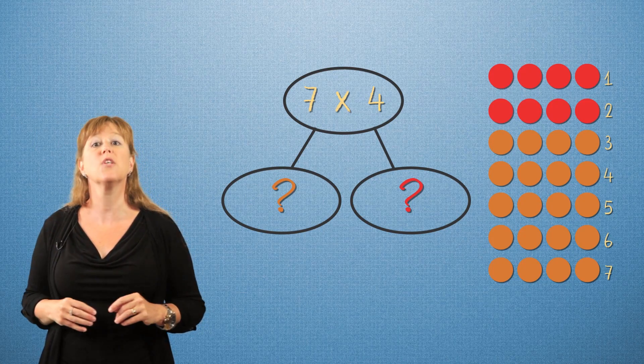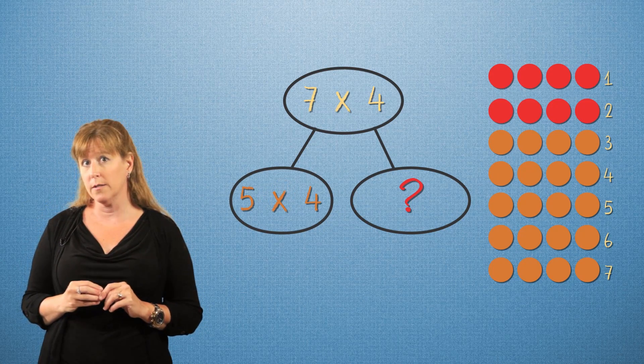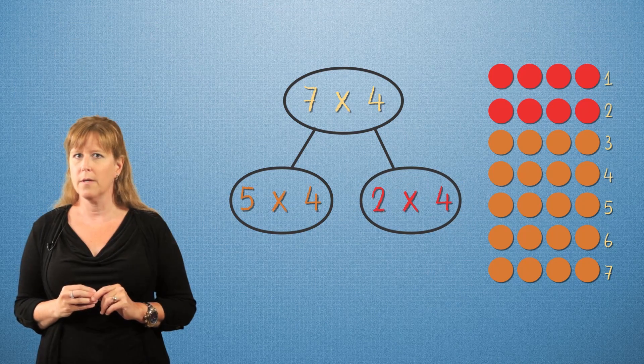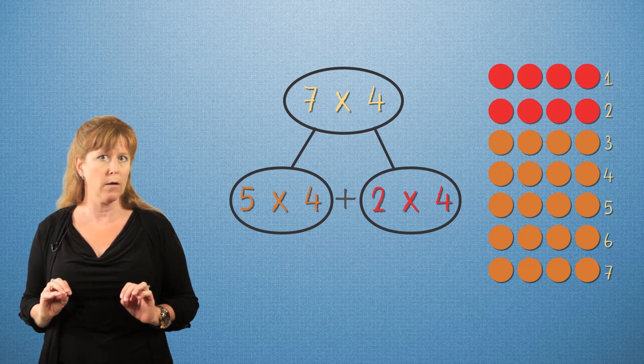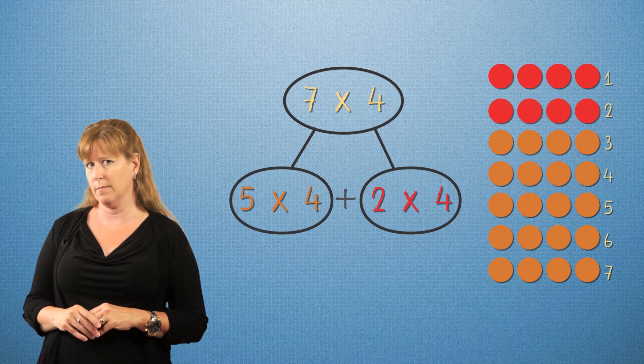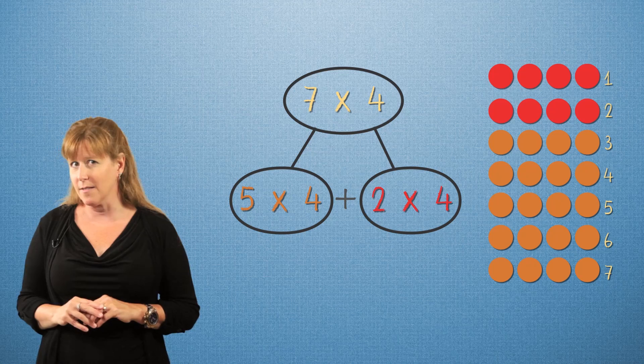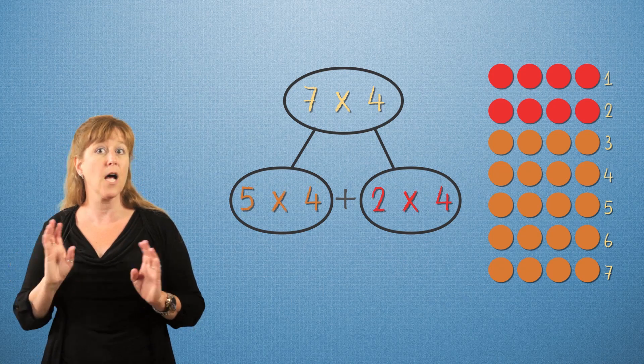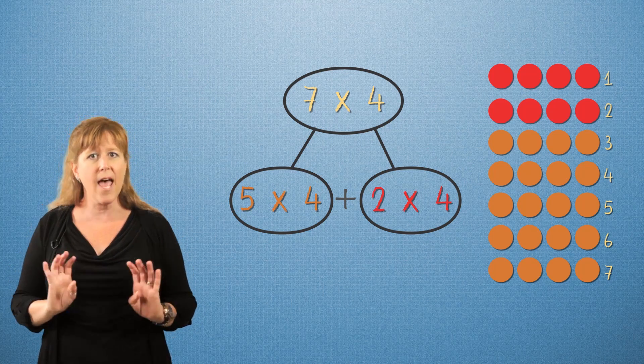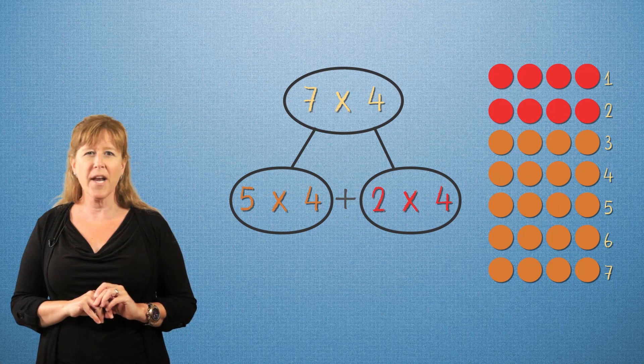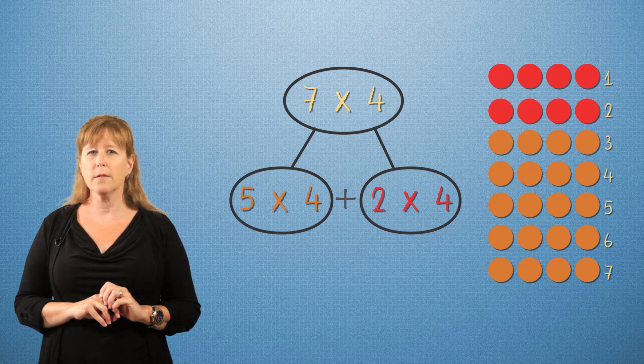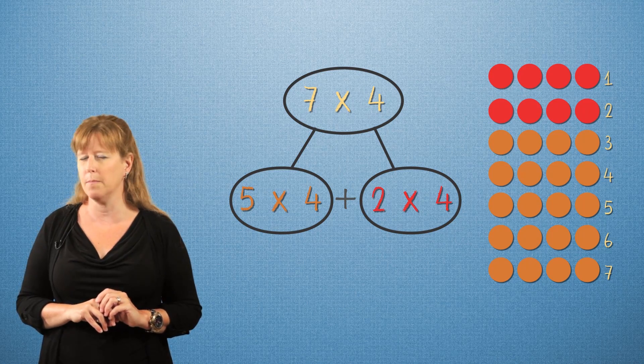Great! So we have five times four and two times four, and five times four plus two times four equals seven times four. To solve this, we multiply five times four and then we multiply two times four. So what is five times four and what is two times four?